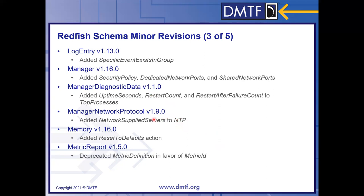In manager network protocol, a fix was made to show which servers in the NTP object have been supplied by the network protocol as opposed to entered by users. The NTP object shows what time servers are in use, but in previous versions there was no distinction between user-entered servers and those populated by the service itself. You can also see reset to defaults there. In metric definition, a switch was made to use the metric ID for better linkage, making it easier to use the metric report and the telemetry service in general.